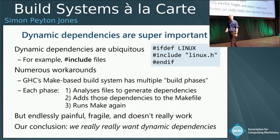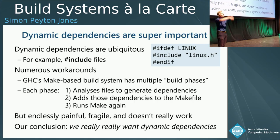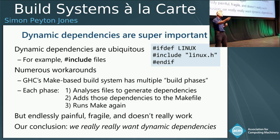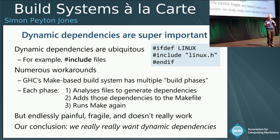Dynamic dependencies are actually really important in practice, though not that common in build systems — yet they're quite ubiquitous. Here's an include file: in your C file, you might say 'if Linux is defined, then include linux.h'. So whether or not a file depends on linux.h depends on the setting of the Linux CPP variable, which itself is a textual thing in some other file. Dynamic dependencies in practice are ubiquitous, and there are all sorts of painful workarounds. We've experienced this pain in a very visceral way within GHC's build system. So I'd just go for a system which has dynamic dependencies.